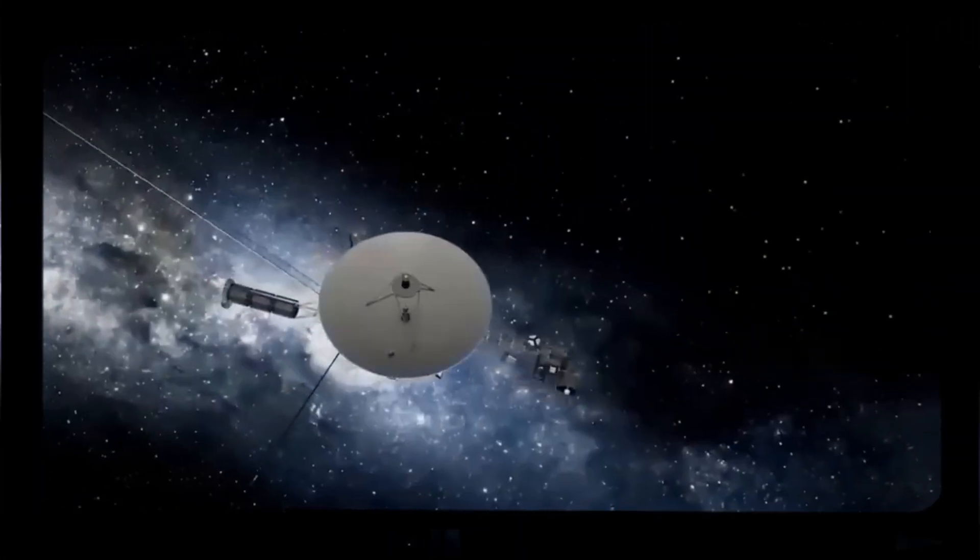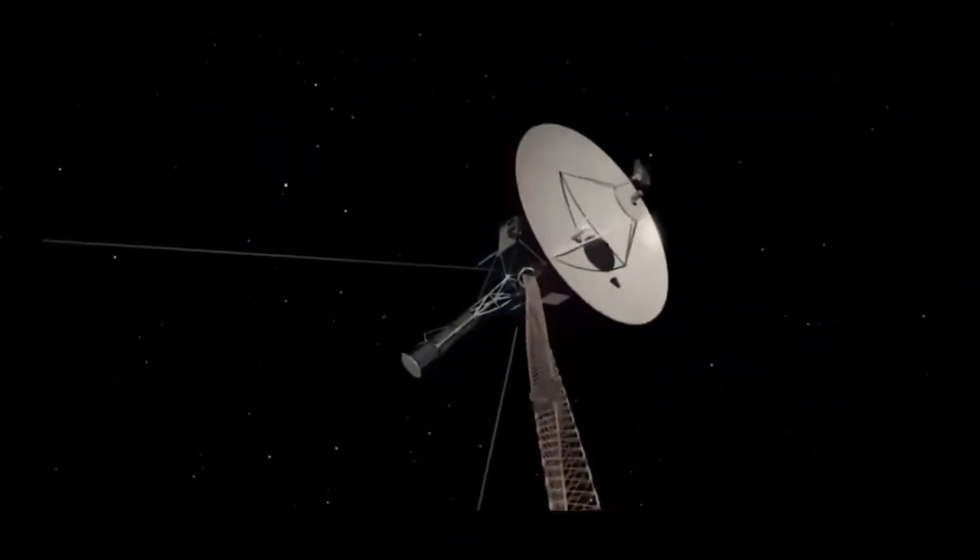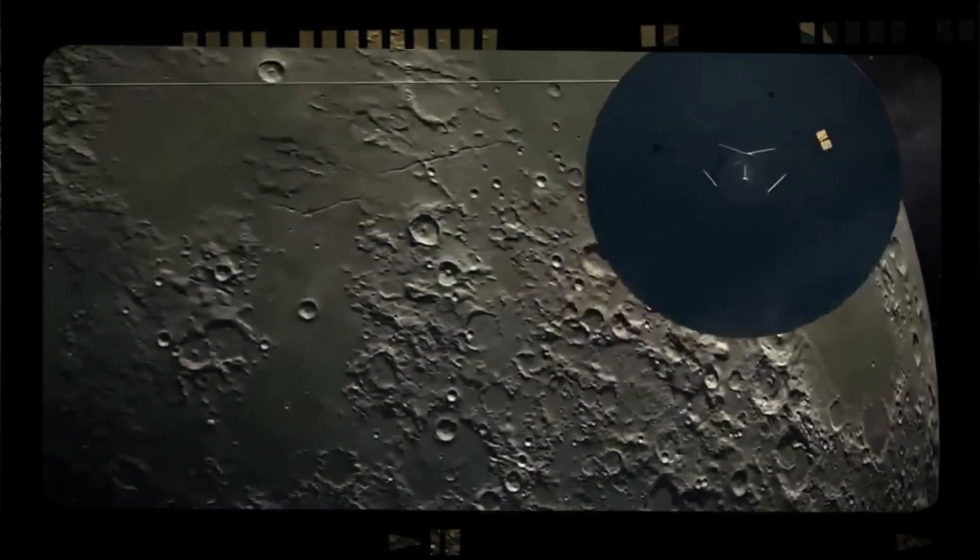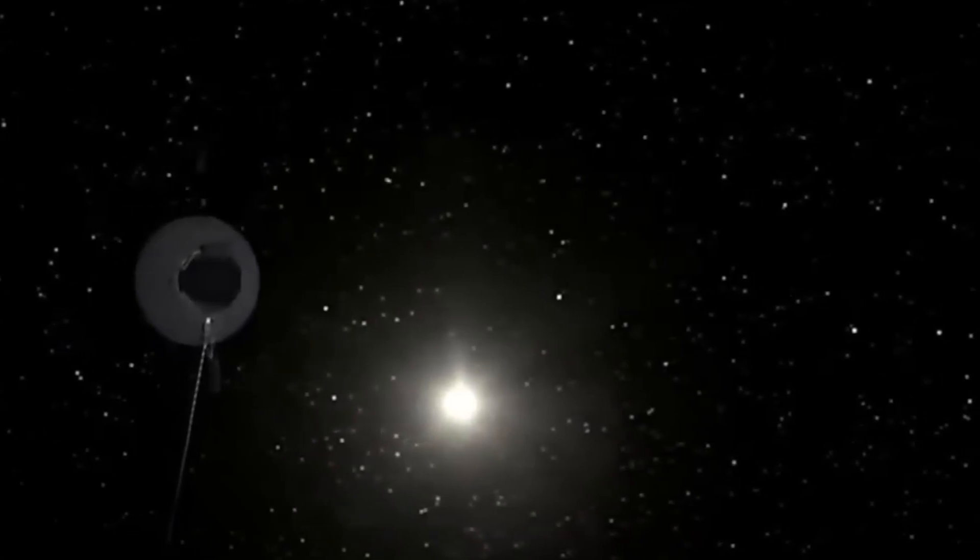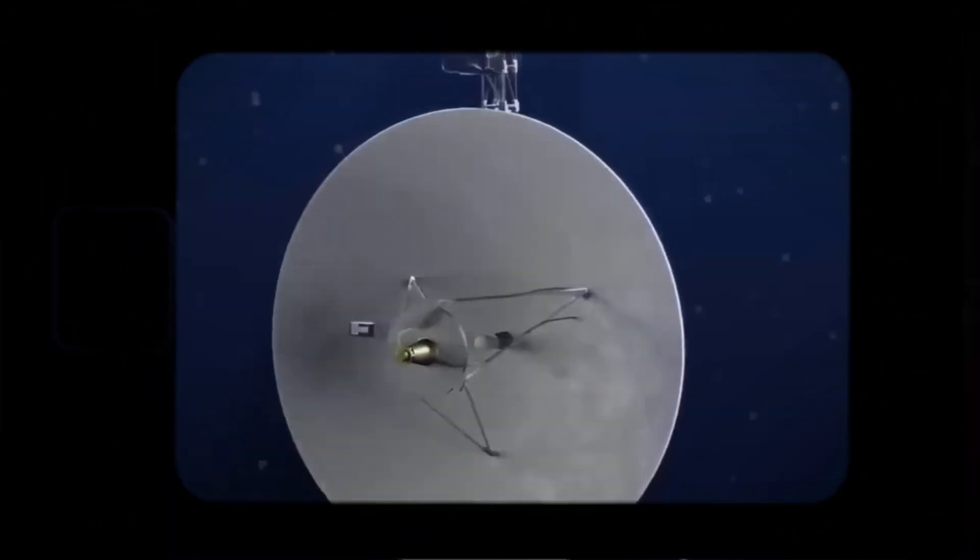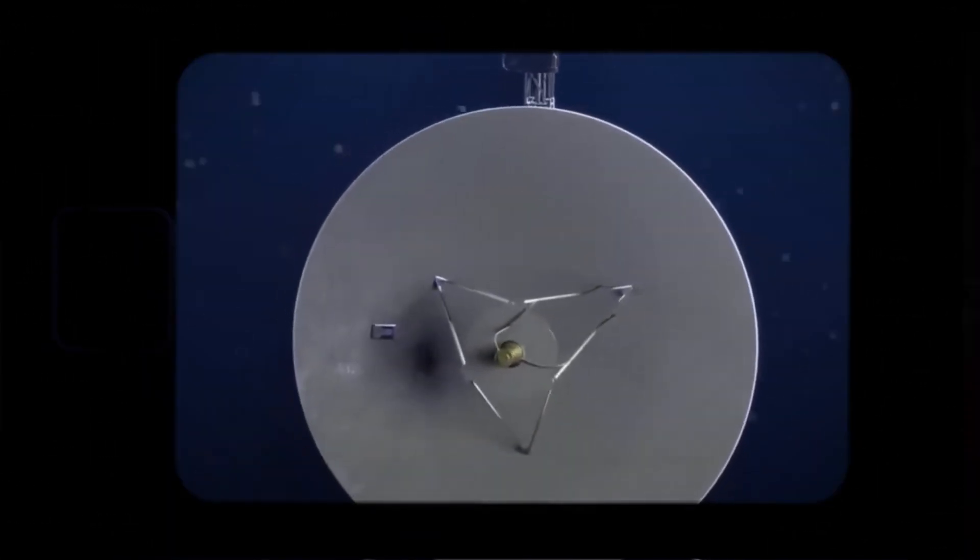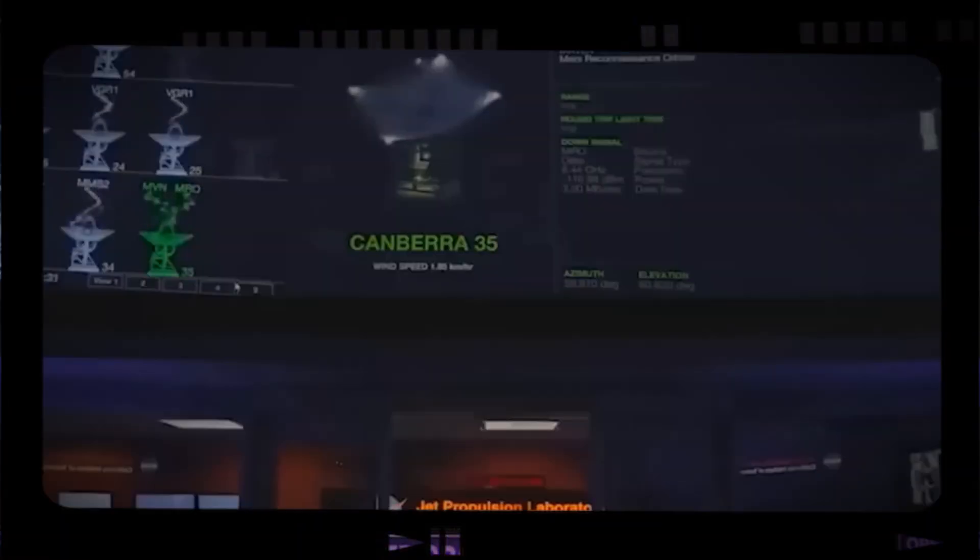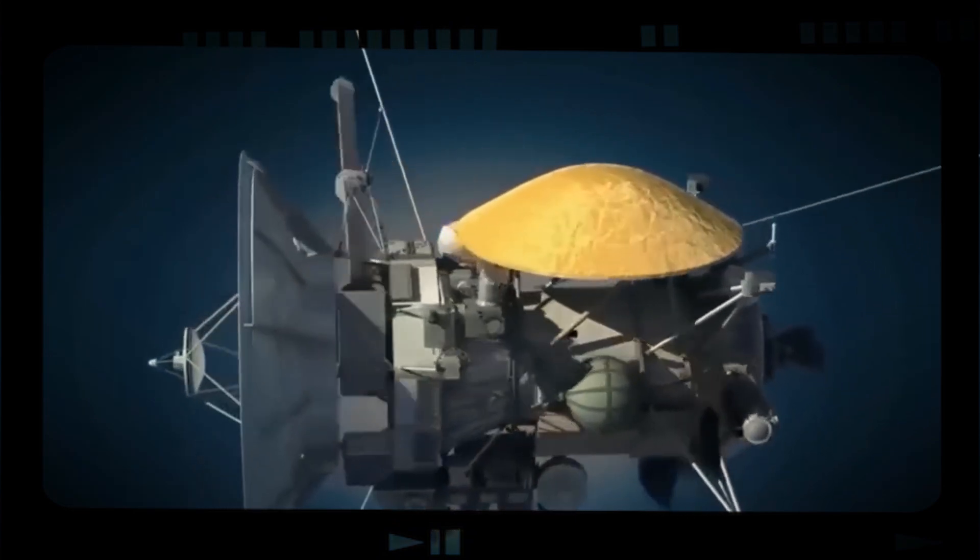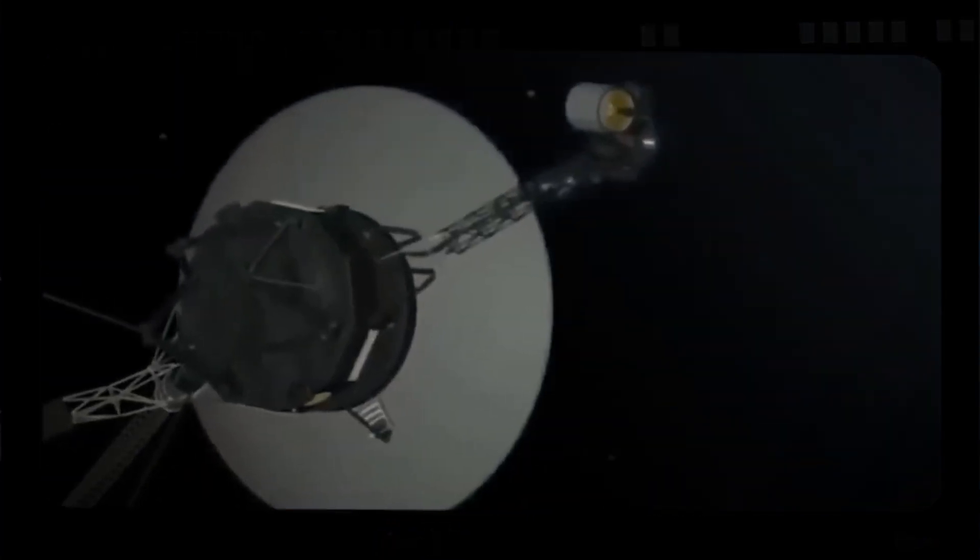Passing by Jupiter and Saturn, Voyager 1 transmitted iconic images of the gas giants, unraveling the mysteries of their intricate atmospheres and imposing ring systems. Its Voyager golden record, carrying a curated snapshot of Earth sounds and images, is a testament to our desire to connect with potential extraterrestrial civilizations.